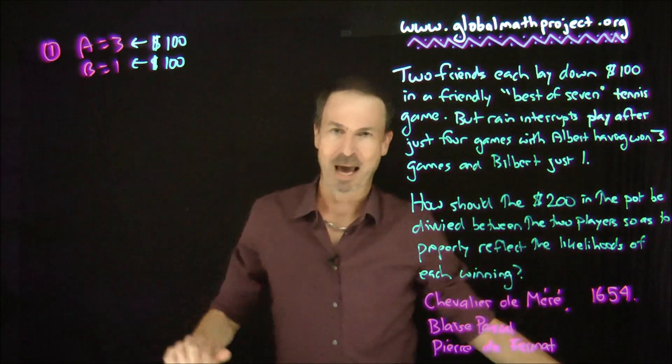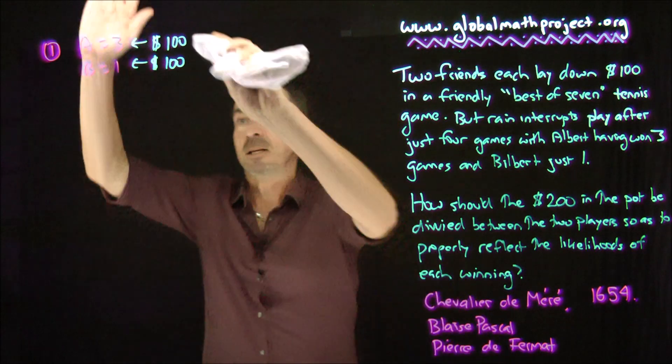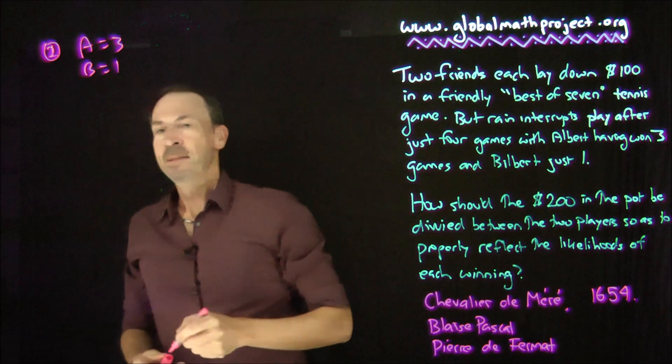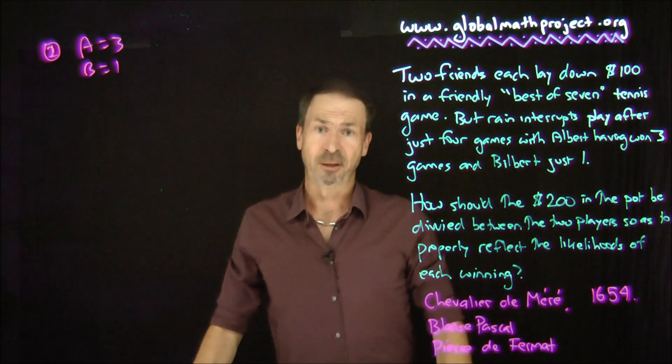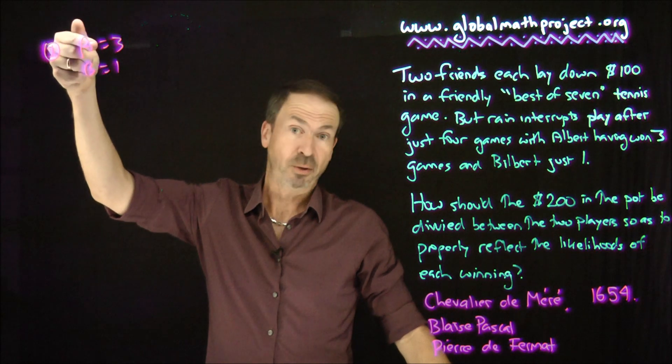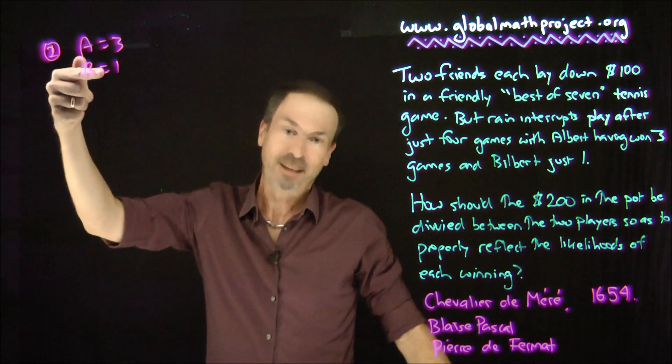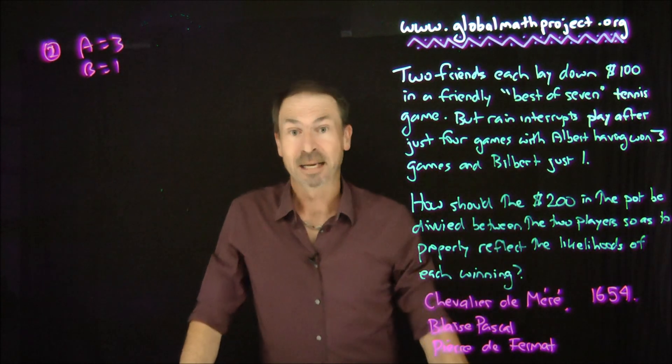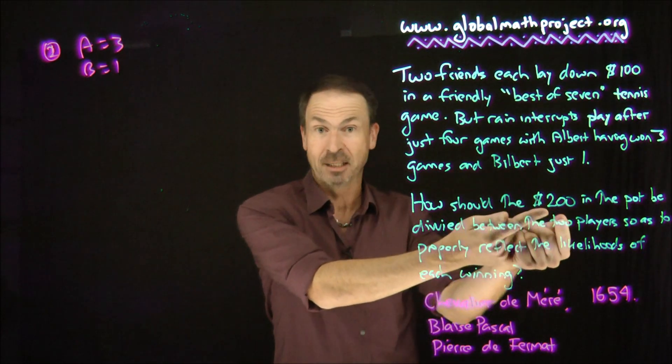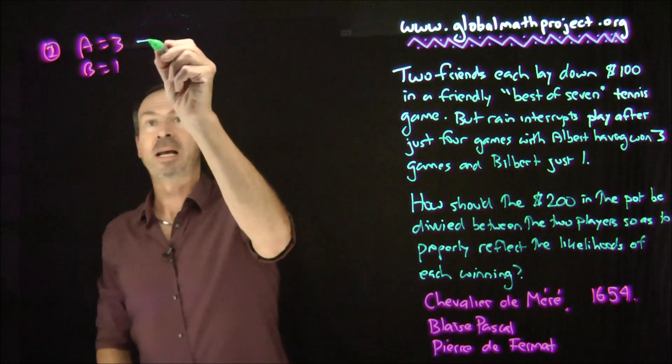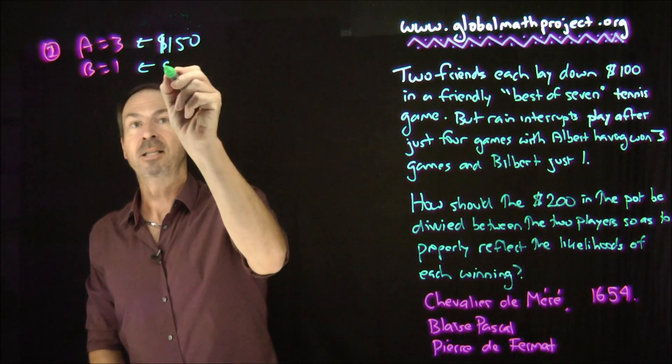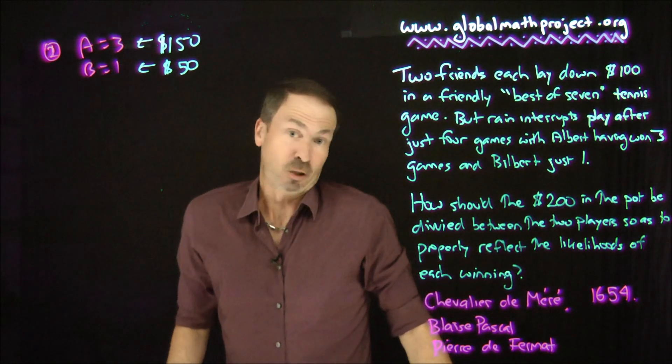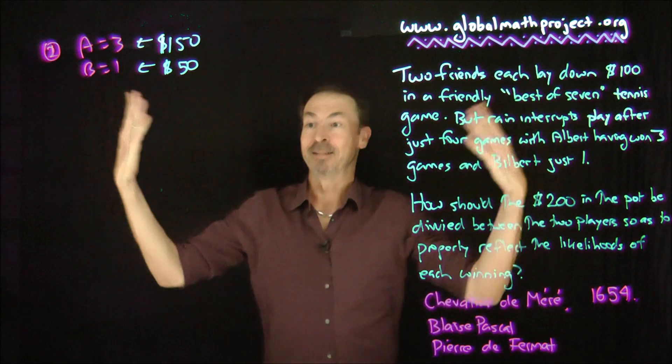Answer number two. Let's actually look at what we've got so far. Here's the data we have. They've played four games. Albert's won three. Bilbert's won one. So the games won come in a three to one ratio, which then suggests maybe we should divide the $200 in a three to one ratio. That is divide into four parts of $50, and give three of those parts to Albert, which would be $150, and one of those parts to Bilbert, which is $50. That seems to be more relevant to the situation at hand.